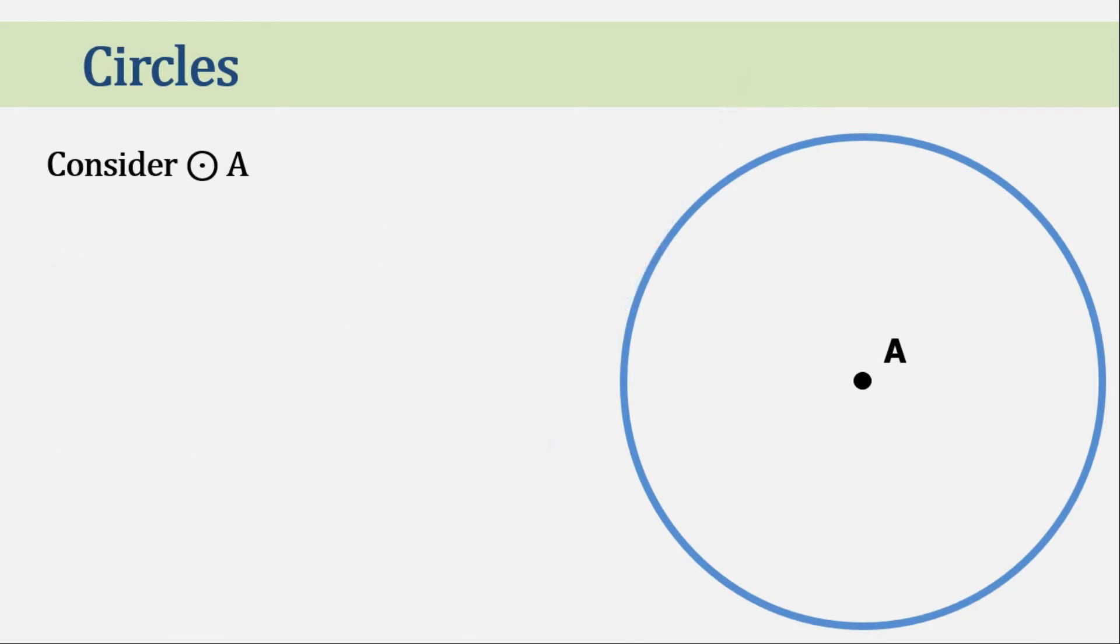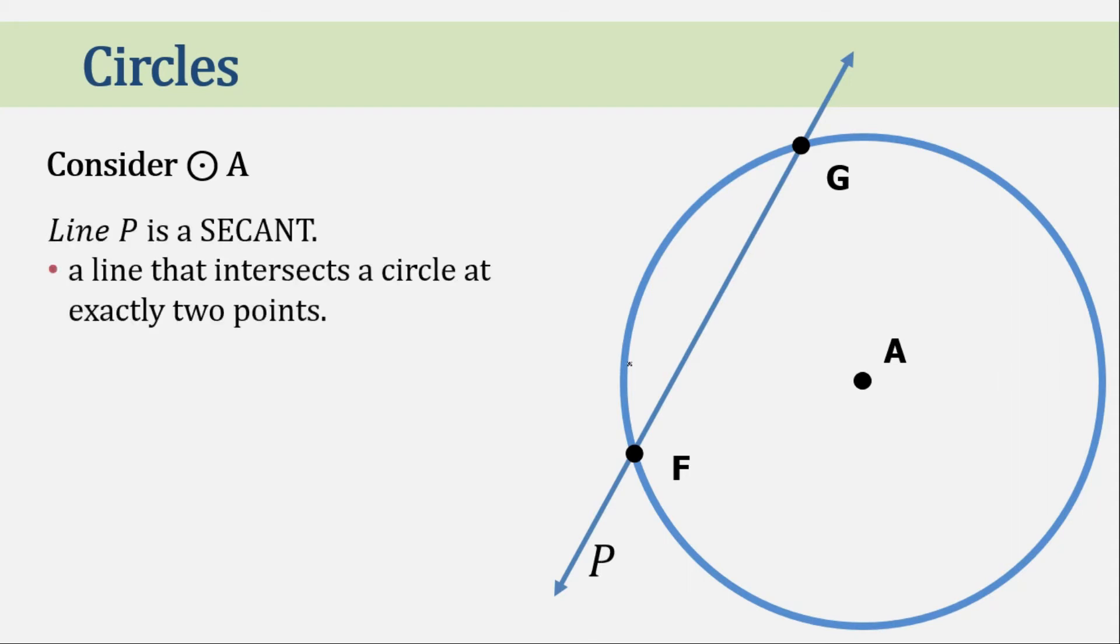Now, how about if the line intersects in two points? Let's call this line P. Now line P is a secant. A line that intersects a circle at exactly two points. A secant also contains a chord. And that is line segment GF.